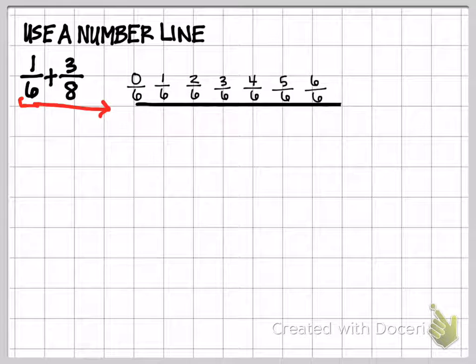Those are the actual fractions. Now I'm going to show you the benchmarks in blue. 0/6 is 0. Any time there is a 0 in the numerator that it is equal to 0. 1 half goes under 3/6 because 3/6 is an equivalent fraction to 1 half. And then 6/6 is 1. Any time you have the numerator and the denominator the same, it is always equal to 1.